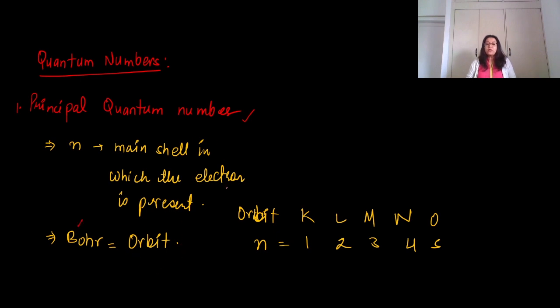For example, if you take orbits K, L, M, N, and O, then n equals 1 for K, n equals 2 for L, n equals 3 for M, n equals 4 for N, and n equals 5 for O.